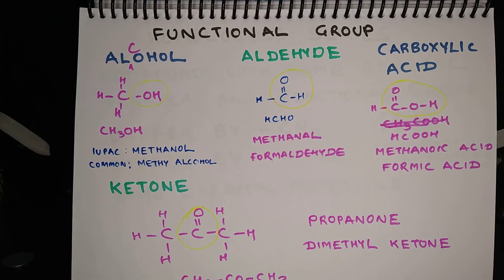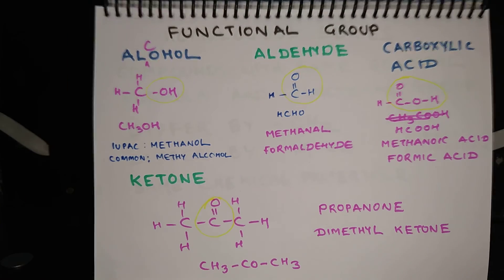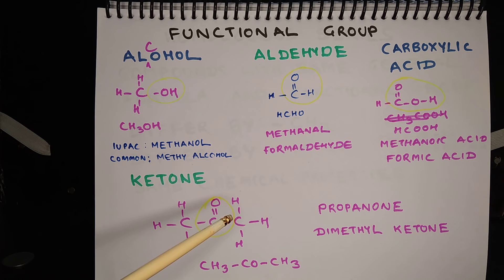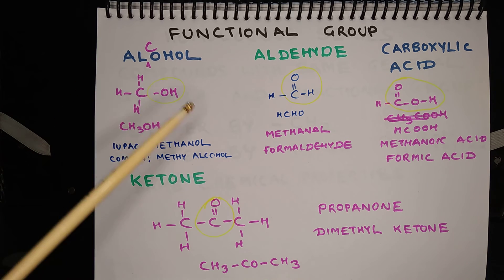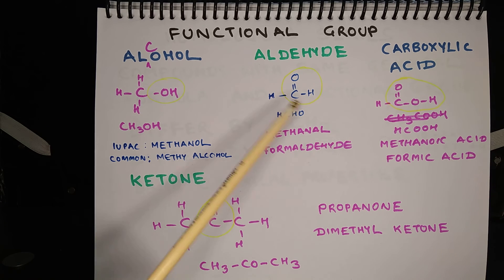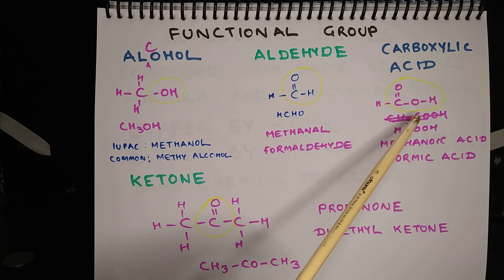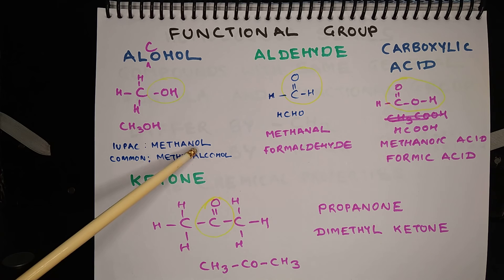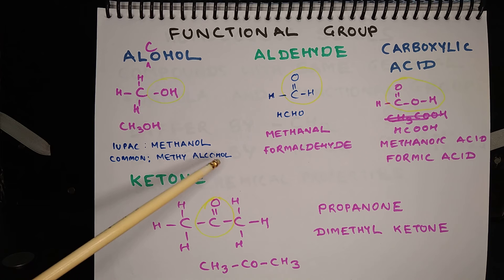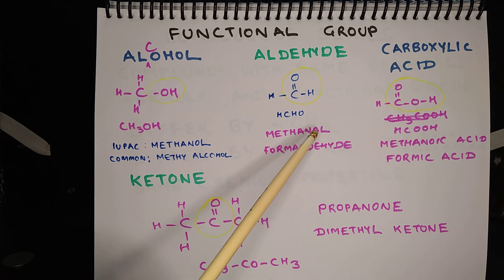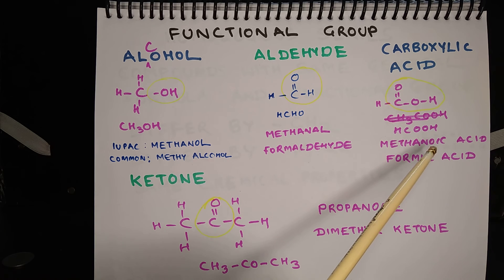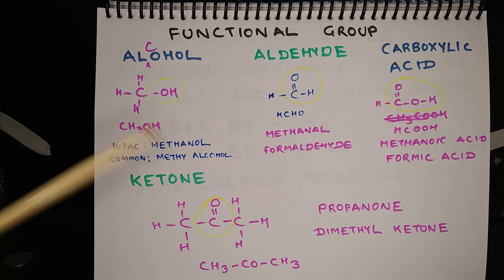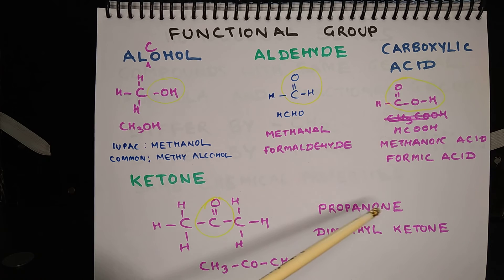Functional group. What happens is that one atom of hydrogen can be replaced by a functional group to make another class of compound. The functional groups are: alcohol, that is -OH; aldehyde, that is -CHO; carboxylic acid, that is -COOH; and ketone, that is -CO. The compounds with an alcohol functional group are named by putting the suffix -ol at the end of the name. Aldehydes are named with the suffix -al. Carboxylic acids use the suffix -oic acid, and ketones use the suffix -one.